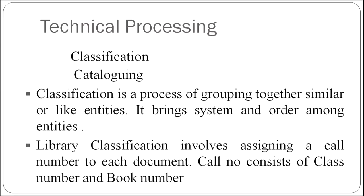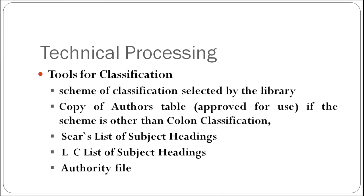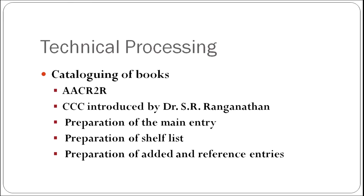Once physical processing is done, technical processing is also required. Technical processing involves classification and cataloguing. Classification is a process of grouping together similar or like entities — it brings system and order among the documents. Library classification involves assigning a call number to each document; the call number consists of a class number and book number. Libraries use a particular scheme of classification — it may be Colon Classification or Dewey Decimal Classification. Libraries also use the Sears List of Subject Headings, Library of Congress List of Subject Headings and authority files.